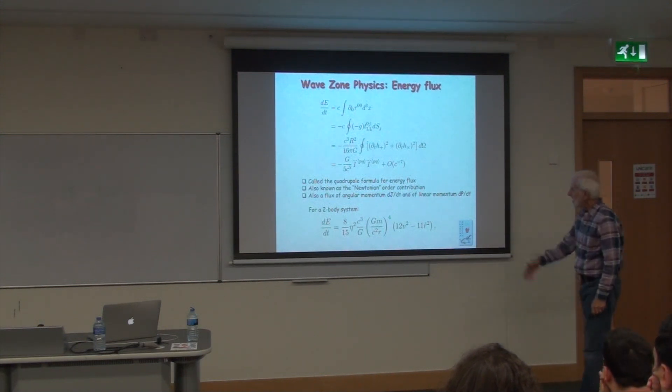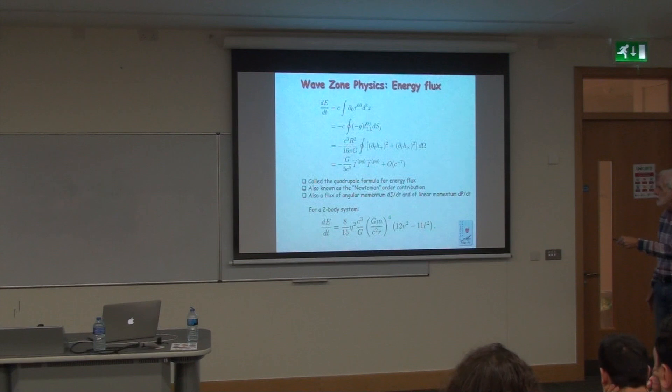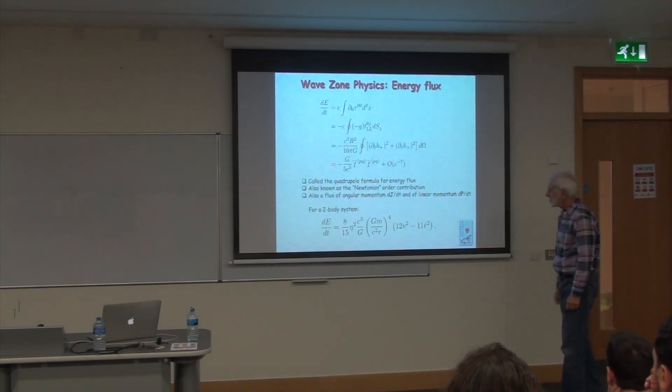We know the lowest order to quadrupole order, or Newtonian order, what h plus and h cross look like. They're just related to the two-time derivatives of the quadrupole moment. So when you take that into account, combine things appropriately, you discover the famous quadrupole formula for the energy flux, that it's three-time derivatives of the symmetric trace-free quadrupole moment tensor contracted on itself, with a factor of 1 fifth. So that's the famous flux formula, quadrupole flux formula. You can do a similar calculation to get the flux of angular momentum. There's a flux of linear momentum, so the system can recoil if its gravitational waves are emitted in an asymmetric manner. All these kinds of fluxes can be calculated in a fairly straightforward way.